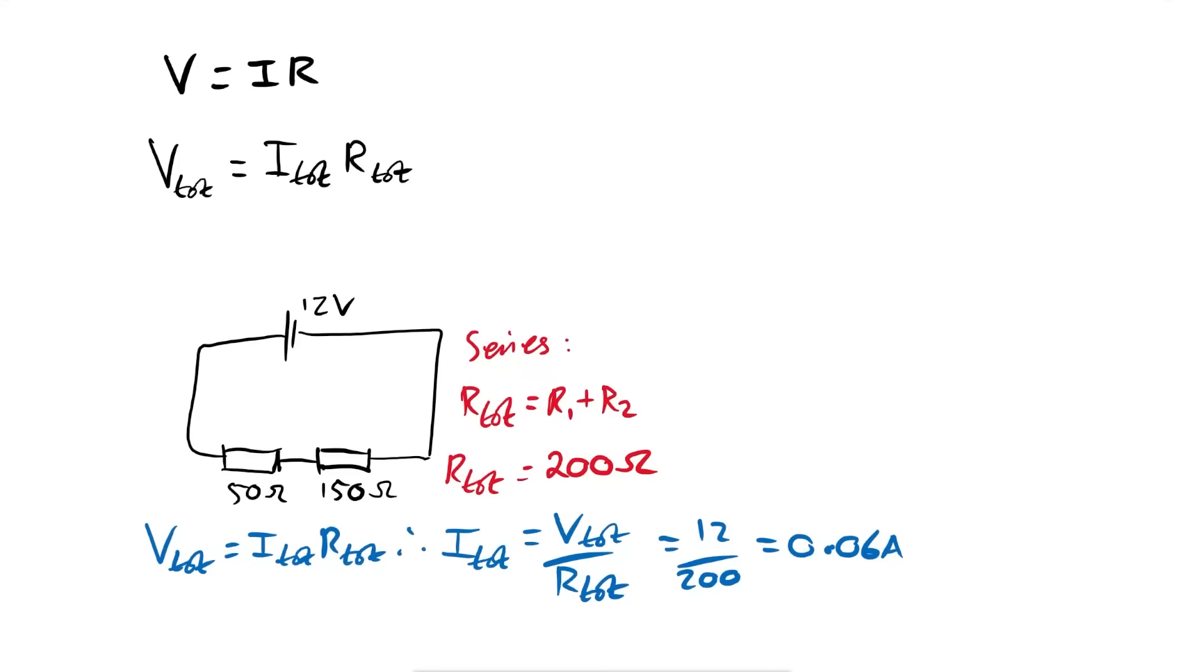So if you're stuck looking at an individual component, if you don't have two things out of V, I and R for a component, look at the whole circuit. See if you can find out the total resistance. A little bit trickier when it comes to parallel circuits. How do we find out the total resistance in this case? We have an equation for it.